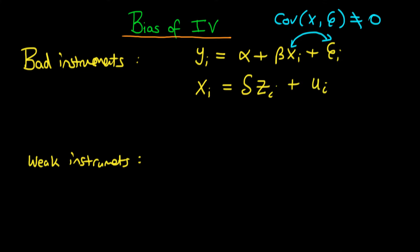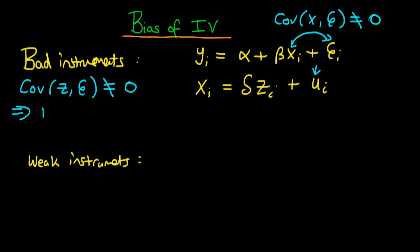x is equal to delta·z plus some error u, where u contains all the variance in x which isn't determined by z. One of the initial assumptions about instrumental variables for it to be consistent is that the covariance between z and our error epsilon has to be equal to zero. If we have a violation of this condition, we say that z is a bad instrument.